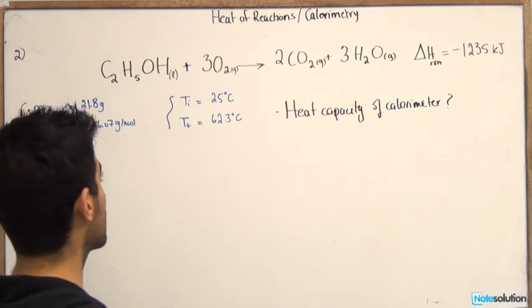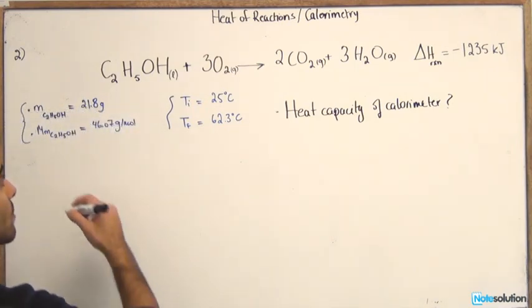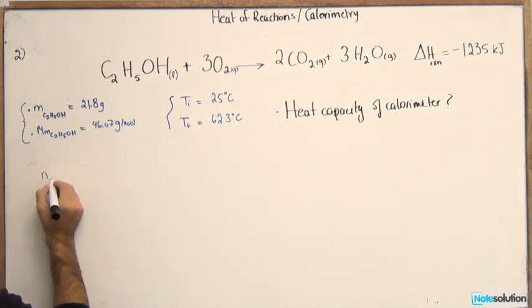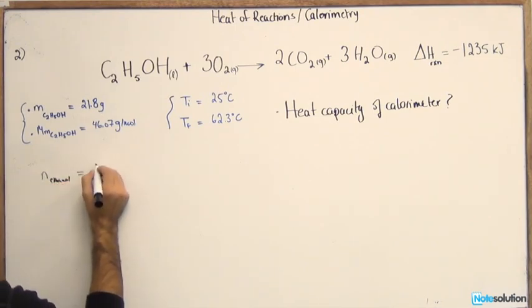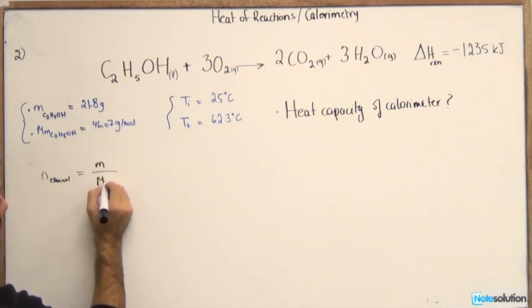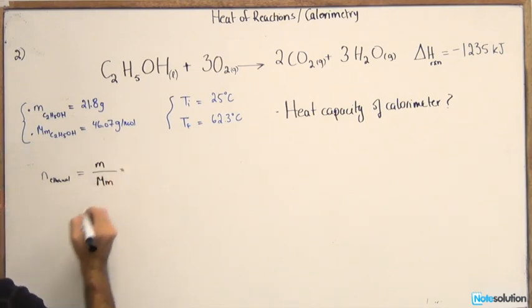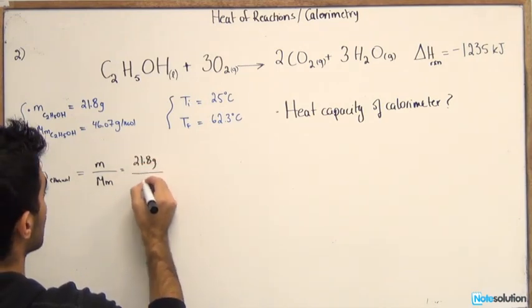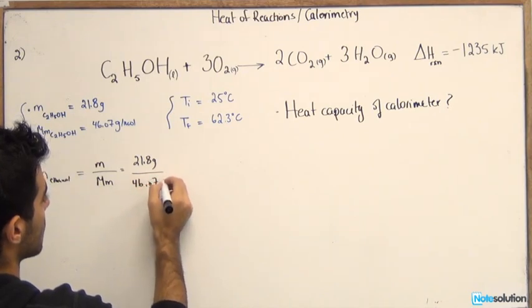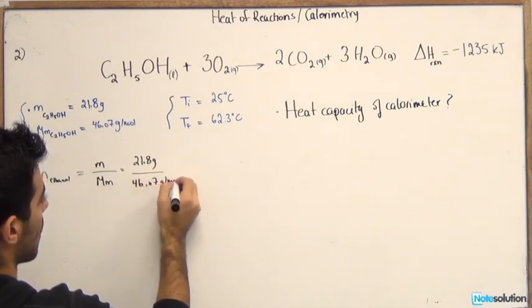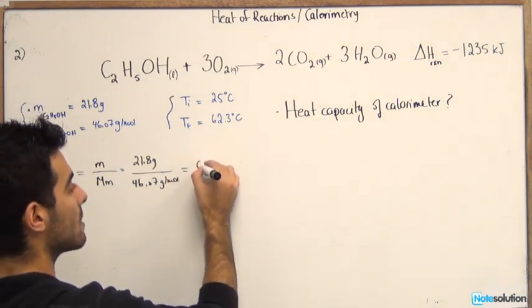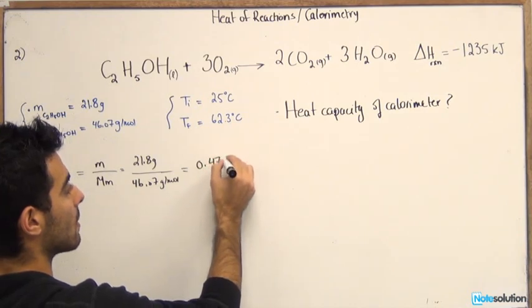So let's go ahead and start solving this problem. First we need to find the number of moles involved in the reaction. So number of moles of ethanol equals mass over molar mass. That would be equal to 21.8 grams over 46.07 grams per mole. If you do the calculations you should end up with 0.47 moles.